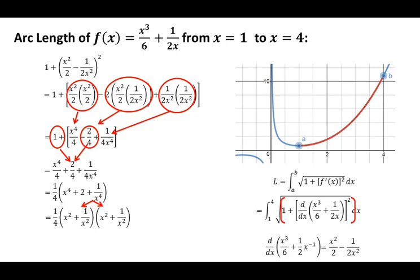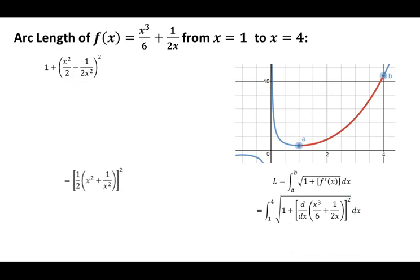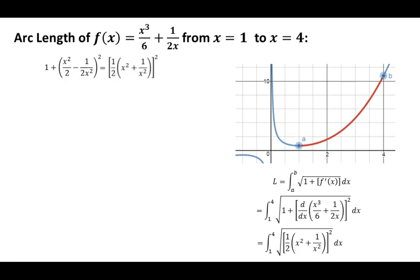Now I've got a formula where taking the square root gives me (1/2)(x² + 1/x²). I can call this a quantity squared, and I've found a value for what's in the red brackets that I can easily take the square root of. Plugging back into the integral, we have the integral from 1 to 4 of the square root of this quantity squared, dx. The square root and the squared cancel, leaving the integral from 1 to 4 of (1/2)(x² + 1/x²) dx.